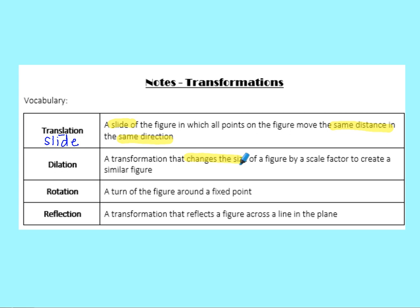Our next type of transformation is a dilation — that's a transformation that changes the size of the figure by a scale factor to create a similar figure. Scale factor means we're multiplying by something, and similar means the same shape but not necessarily the same size. Think about your eyes: in light your pupils get smaller, in darkness they get larger — like when the eye doctor gives you eye drops and your pupils dilate. They're changing size but still a circle.